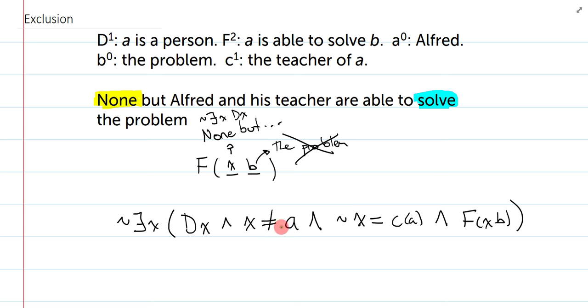So, this now says, the only people who could potentially solve the problem are Alfred and Alfred's teacher. Now, the question you might want to ask here is, should I actually say that Alfred can solve the problem, and that Alfred's teacher can solve the problem? And, this is what we talked about in class, as a difference between implication and implicature. In exclusionary cases, it turns out that we do not logically imply this.